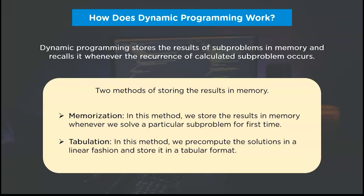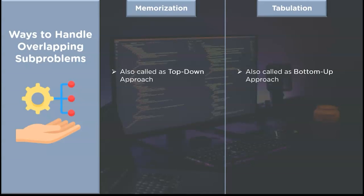In the case of memoization, we store the result in memory whenever we solve a particular sub-problem for the first time. Whereas in tabulation, we precompute the solution in a linear fashion and store them in a tabular format. Memoization is also known as the top-down approach, whereas tabulation is known as the bottom-up approach. These names are assigned based on how they approach problem solving — the first saves results in memory based on call stack occurrences, while the second solves sub-problems in a sequential manner.